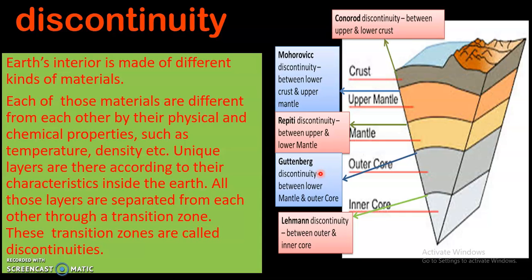The last and final discontinuity is Lehmann discontinuity. It is the discontinuity which separates the outer core and inner core, or simply it divides the core into two parts — outer core and inner core. This is called Lehmann discontinuity.